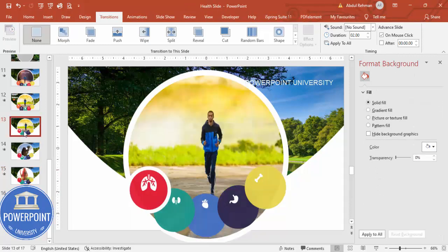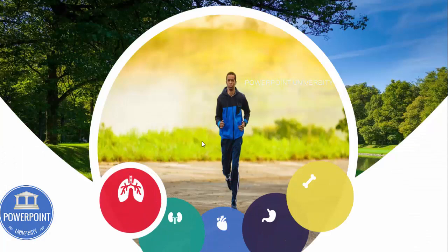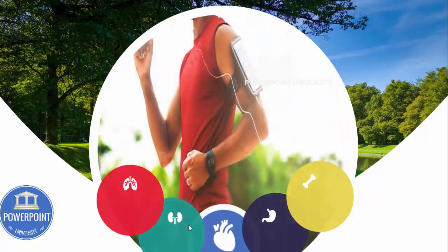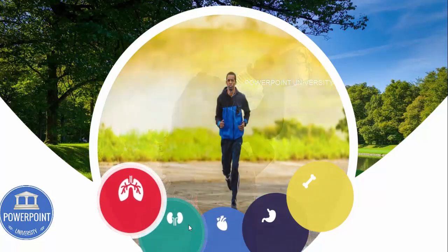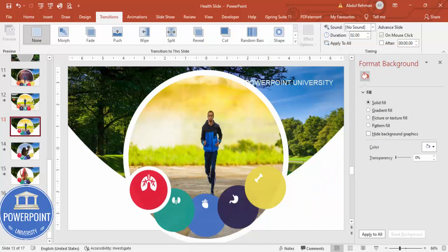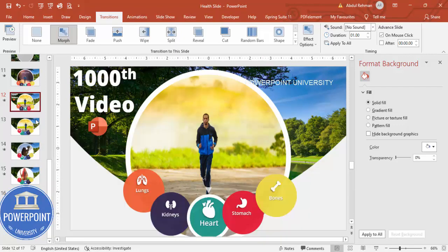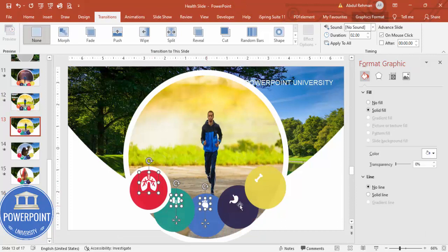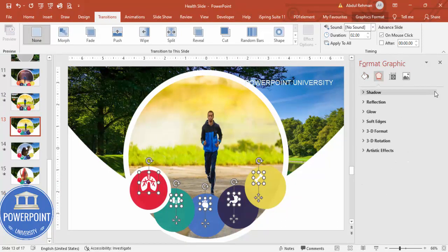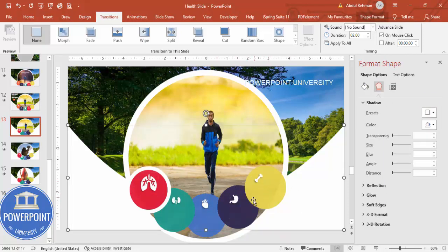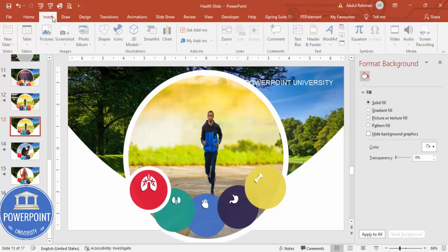Let me show you from the beginning. On the first slide the image is shown; when I click, the image changes and you can see the kidney size increases, then the heart one. You can do the similar thing for the stomach and bone slides. You can also give a shadow effect — go to Format Shape, then Shadows, and choose a shadow that makes the shape more prominent.